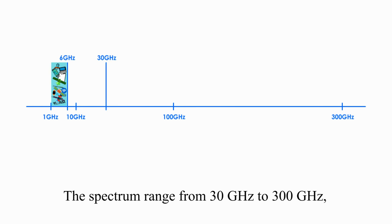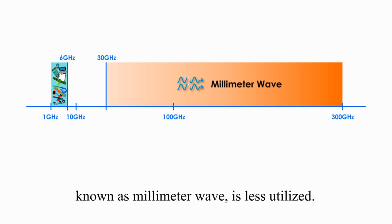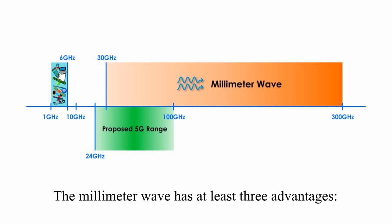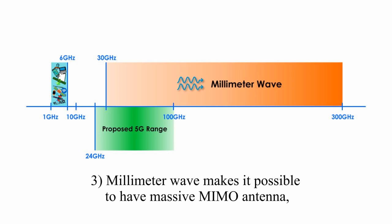The spectrum range from 30 GHz to 300 GHz, known as millimeter wave, is less utilized and is a new territory. Thus, the range from 24 GHz to 100 GHz is proposed for 5G. The millimeter wave has at least three advantages. One, it is a new and less used band. Two, higher frequency waves carry much more data than lower frequency waves. Three, millimeter wave makes possible massive MIMO antennas, which is the second 5G technology.